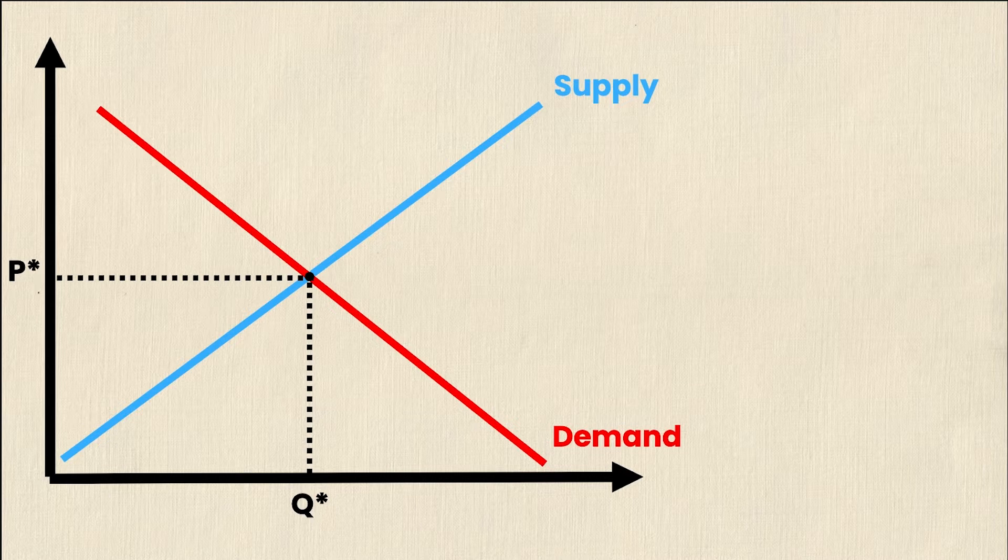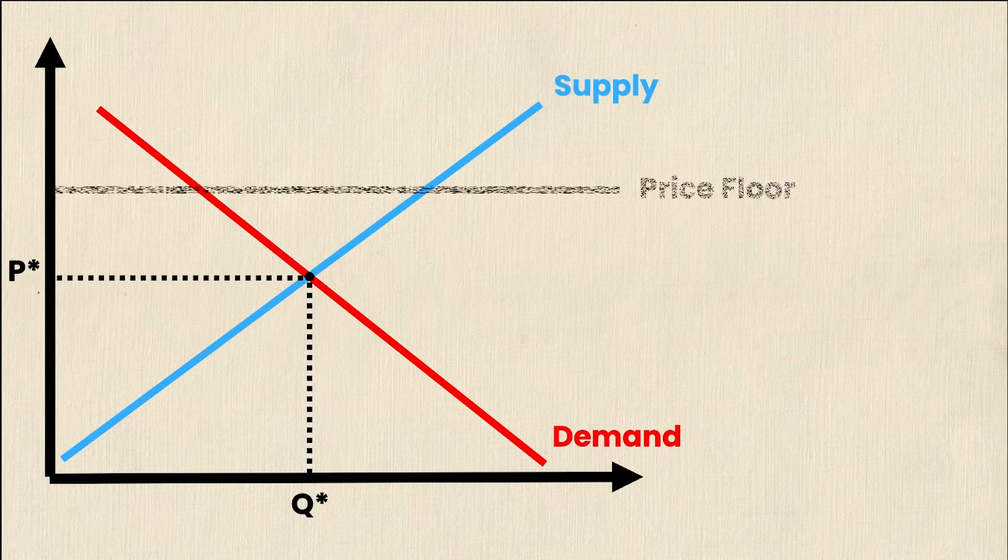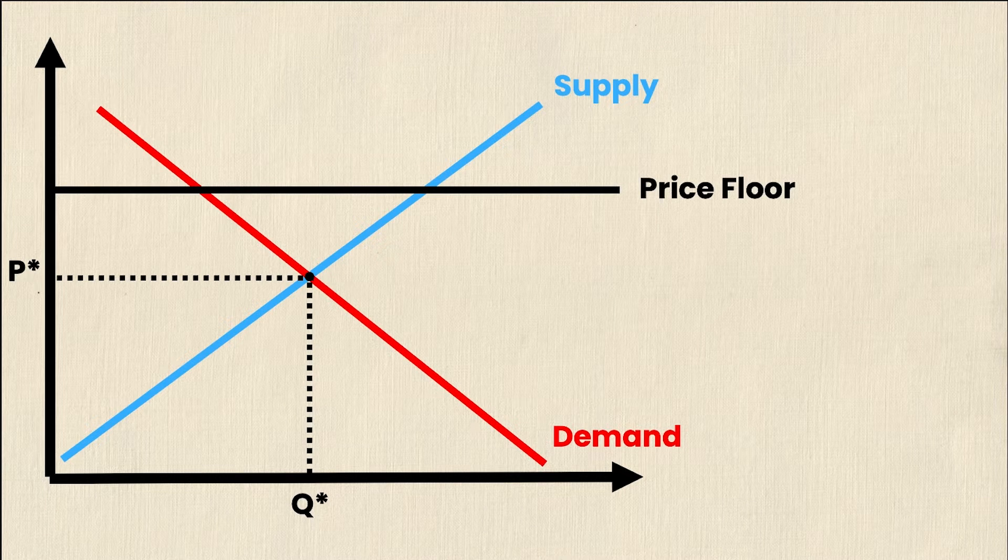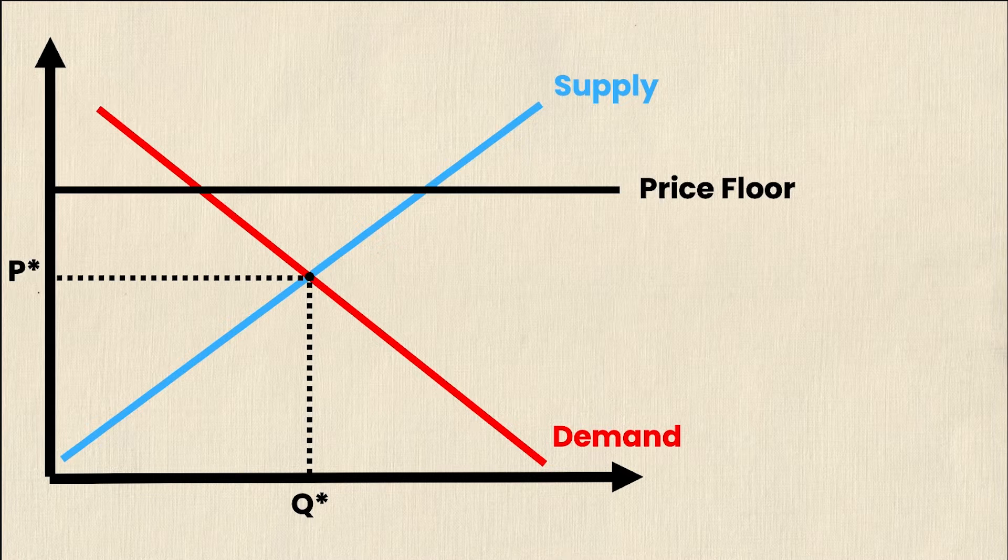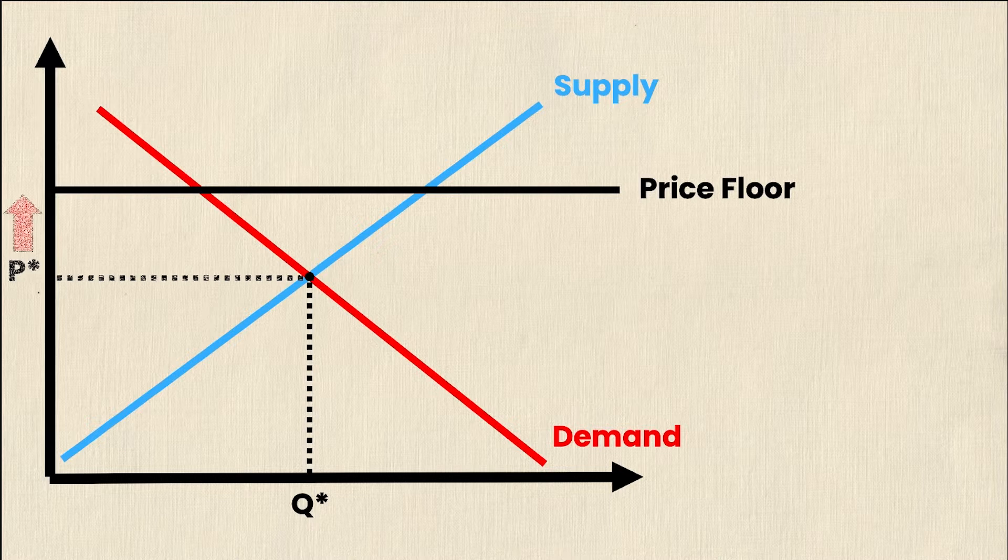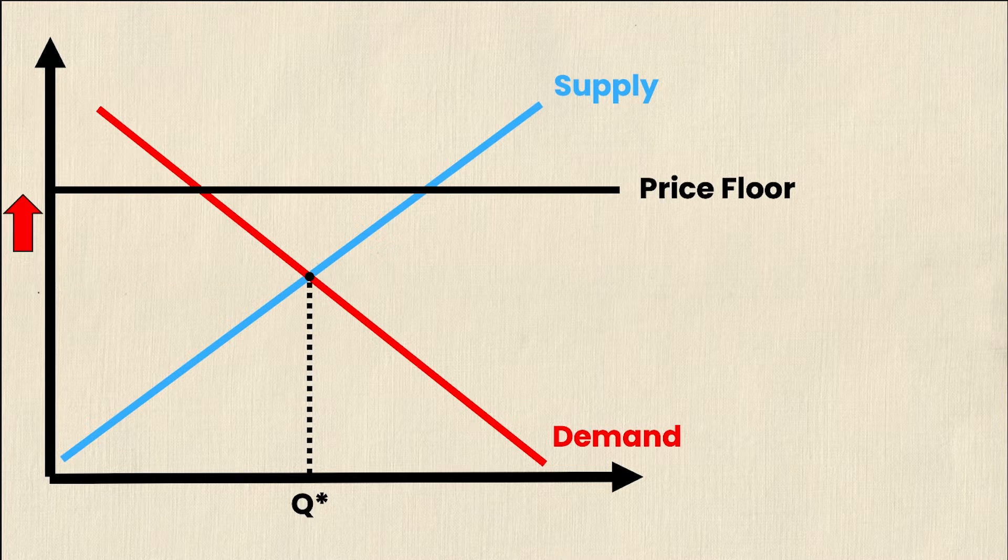So if the government believes that the equilibrium price is too low, it can impose something called a price floor. A price floor is a legal minimum that must be charged for a good. Now in order for a price floor to be effective, or what economists call binding, the price floor must be higher than the equilibrium price.